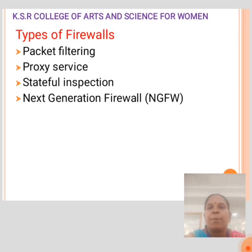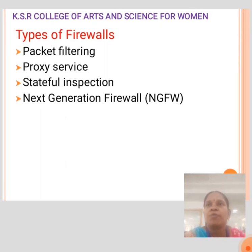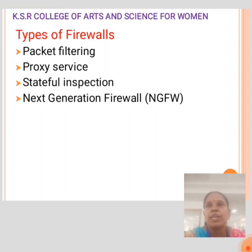Types of firewall include: Packet filter, Proxy service, Stateful inspection, and Next generation firewall. Packet filtering analyzes a small amount of data and distributes it according to the filter standard. Proxy service is a network security system that protects via filtering messages at the application layer.